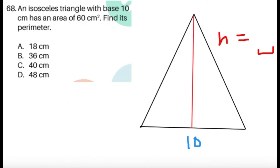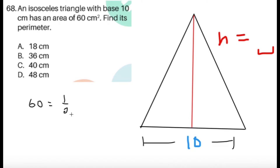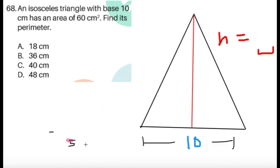For item 68, an isosceles triangle with base 10 centimeters has an area of 60 square centimeters. Find its perimeter. We have a base of 10 and an area given, so we can solve for the height. One-half times base times height equals area: 60 equals one-half times 10 times h. Simplifying, 60 equals 5h, so h equals 60 divided by 5, which gives h equals 12.